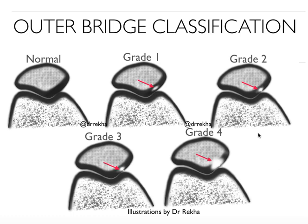Thank you Dr. Rekha for the excellent illustrations of chondromalacia patella. This is a normal cartilage — grade 0 — because radiologically we don't see any abnormality. Sometimes on arthroscopy there might be fibrillations which are not visible on 1.5 Tesla MRI, whereas these fibrillations may be appreciable on 3 Tesla and 7 Tesla MR scanners.